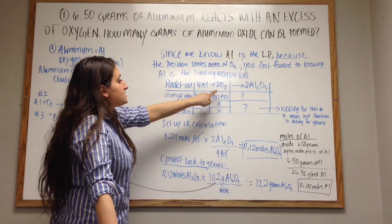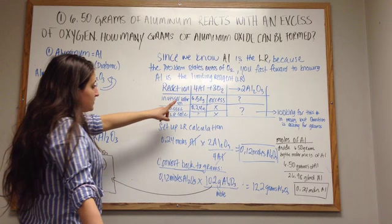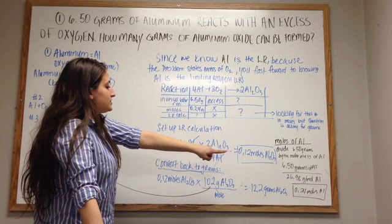We're trying to convert that grams to moles. We take 6.50 grams, and we divide it by the molar mass of aluminum, which is over there, which is 26.98. And we end up with 0.24 moles of aluminum.